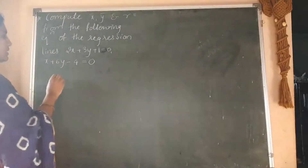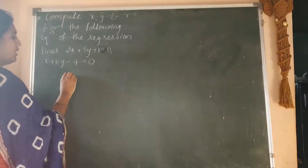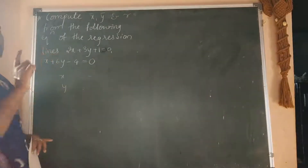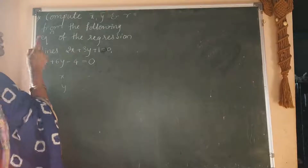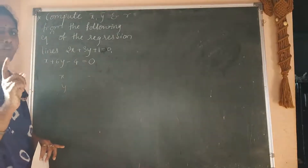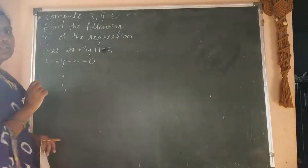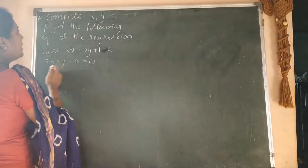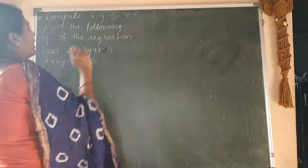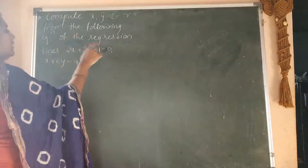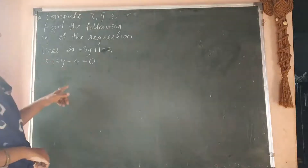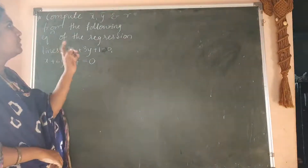In the previous examples, they had given the set of x and y values in the form of a table. There we were computing x bar, which is the mean of x, and y bar, which is the mean of y, and r, the coefficient of correlation. Here they are asking to compute x bar, y bar and r from the following lines of regression — meaning x and y are given, and we are finding x bar, y bar and r.